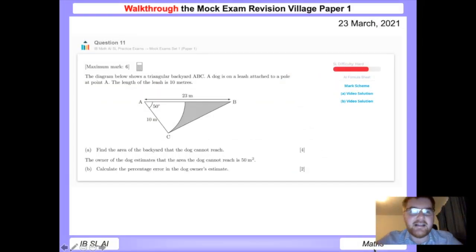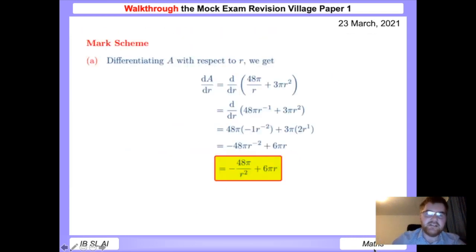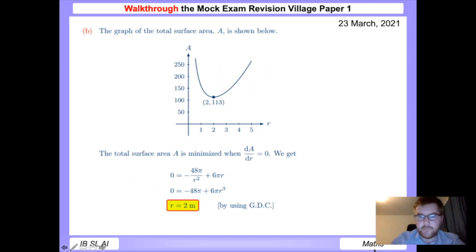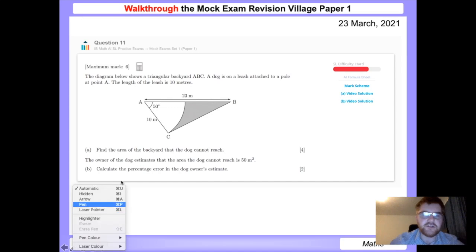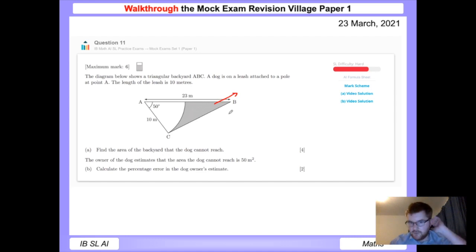Okay, question 11. So the diagram below shows a triangular backyard ABC. A dog is on a leash, classic question, attached to a pole at point A, and the length of the leash is 10 meters. You're given all the information in the question from the diagram. The first thing we need to do is work out the area of the backyard that the dog cannot reach, which the examiner has done very kindly for us and shaded in this area.